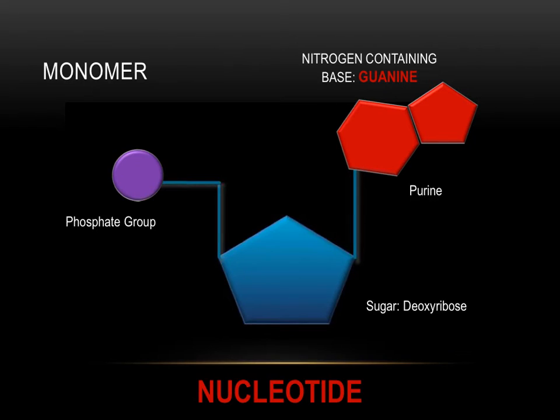The nitrogen base in this nucleotide is different. It's composed of two rings and is categorized as a purine. Guanine is shown here in red, and it's a purine, double ring shape. Adenine, shown here in pink, is also a purine because of its double ring shape.